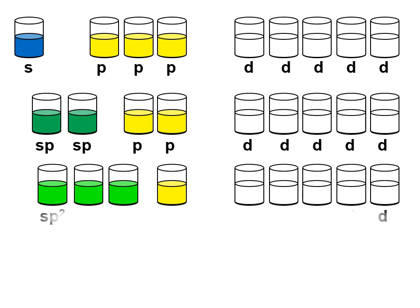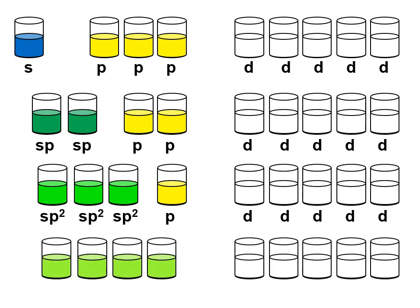If we hybridize one S with two P orbitals, we get three SP2 hybrid orbitals. One of the P orbitals is unhybridized, as are the D's. And finally, if we take the one S with all three of the P orbitals and hybridize them, we get four equivalent orbitals called SP3 hybrid orbitals, and the D's are unchanged.